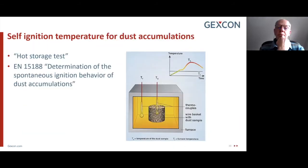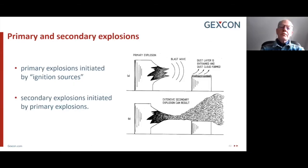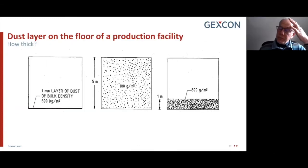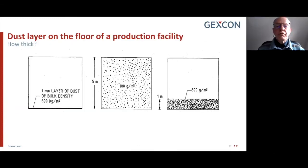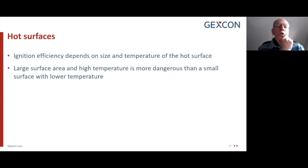That is something especially important for storage. A primary explosion is basically what is happening inside equipment. You can have a serious explosion inside the building just because there is dust lying on the floor. A hot surface is an important ignition source.